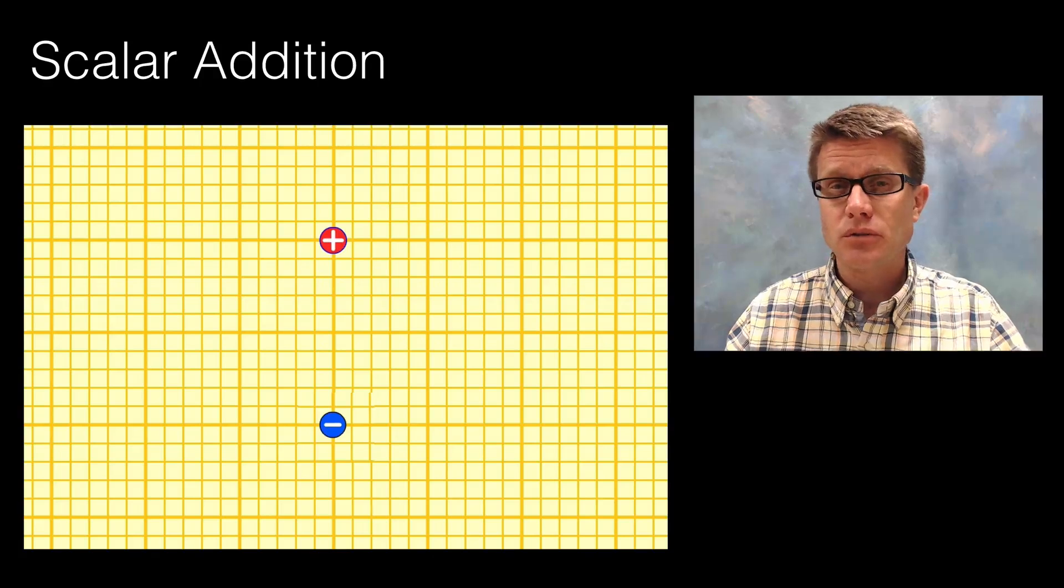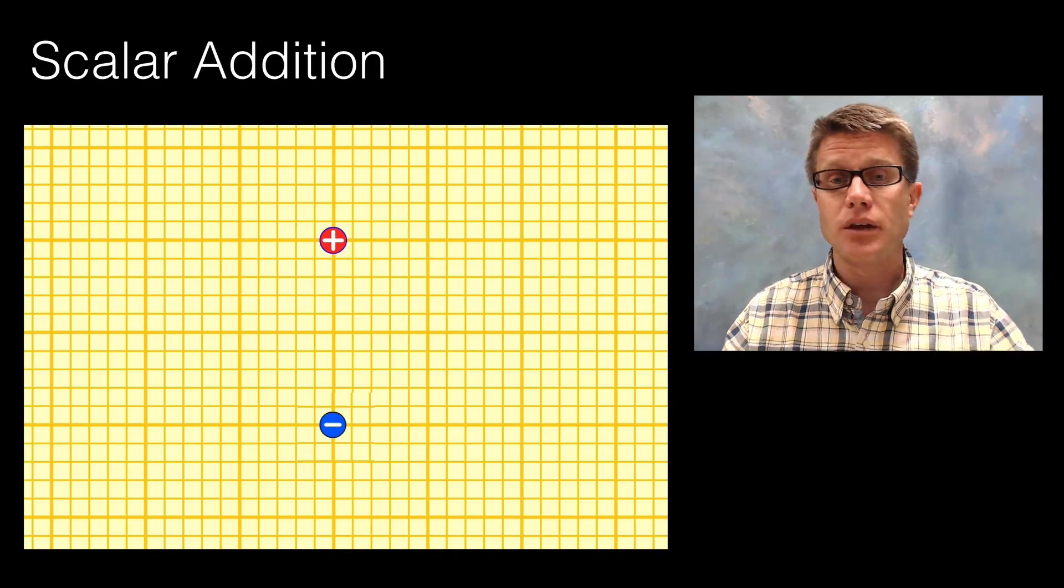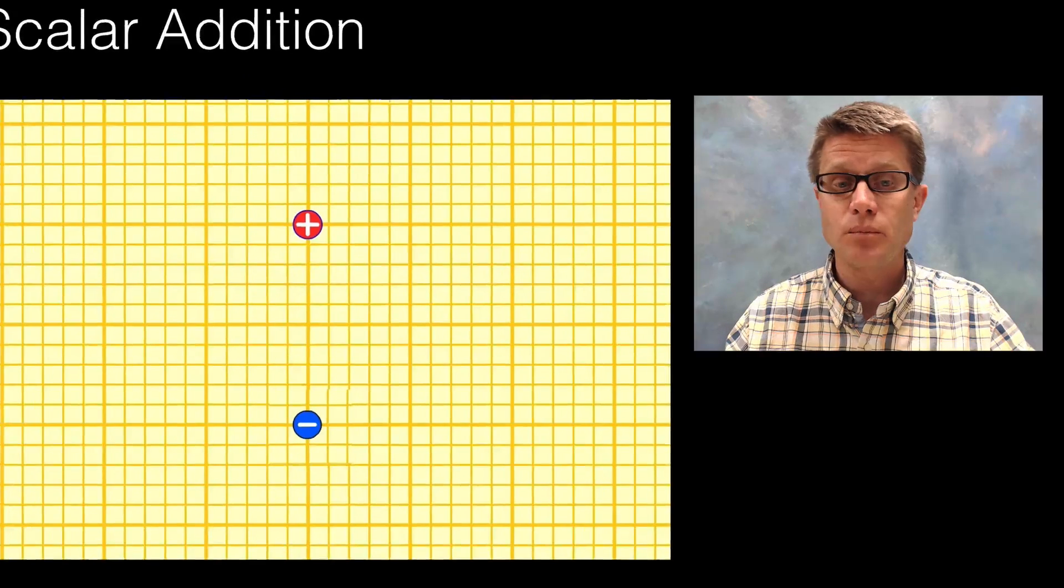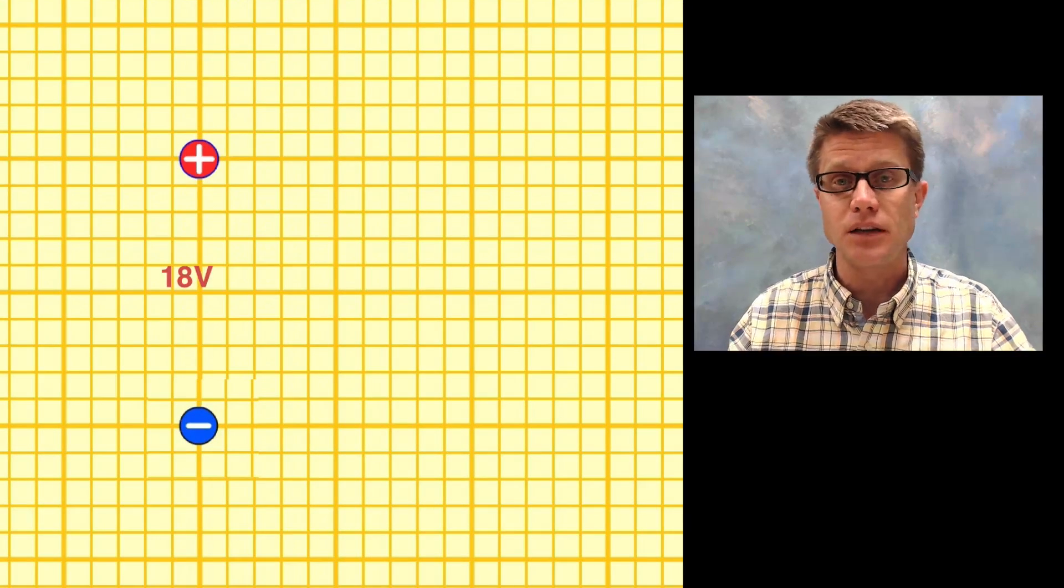How would you do it if we took those two charges however? How would you take those two scalar fields and then bring them together? Well let's choose one point. So at this one point between remember the positive gave it positive 18 volts.